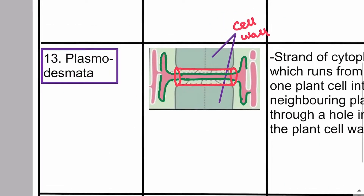In plant cells there are many cytoplasmic connections like this — many strands of thin cytoplasm that run through the holes in the cell walls. Between the neighboring cells there are cytoplasmic connections: the cell walls of neighboring cells have holes in them through which strands of cytoplasm run, and these are known as plasmodesmata.